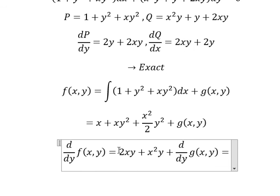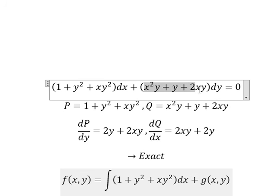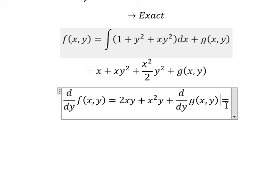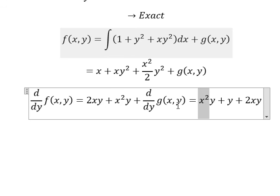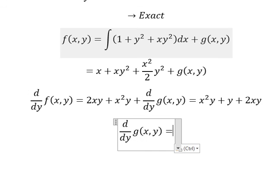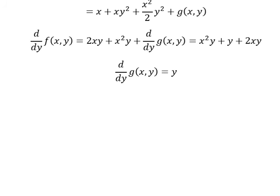So we have 2xy plus x squared y, and this one equals to x squared y plus y plus 2xy. So we find d/dy of g(x,y) equals to y. We put the integration for both sides.